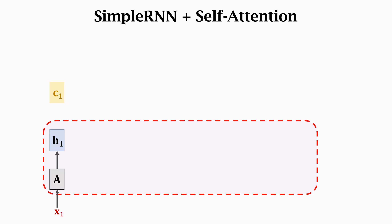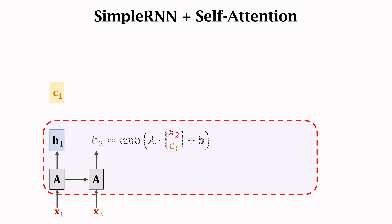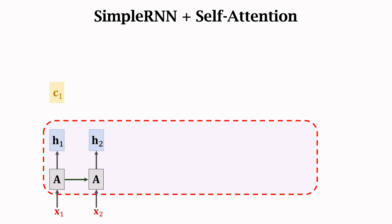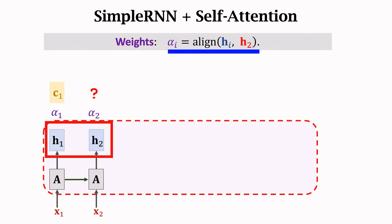The RNN reads a new input vector x2 and then updates the state H. The information of x1 and x2 will be compressed into the new state. The new state H2 is computed by this equation — H2 is a function of C1 and x2. C1 is a summary of the old input x1, so H2 knows both x1 and x2. Next, we compute a new context vector. To compute a context vector, we first compute weights alphas. Each of the existing states will be assigned with an alpha. The weights are computed using the align function, which measures how well the vectors H and H2 are aligned.